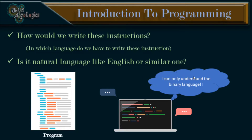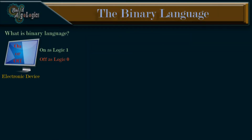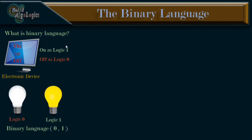Just like we as human beings are able to understand natural languages — or we can say human-based languages — similarly, computers have their own language, which is nothing but binary language. So what is binary language? First of all, the computer is nothing but an electronic device or component. Every electronic device has only two states: either it is on or off. These on and off situations we logically represent as 1 and 0. When the power is on, this is logic 1; otherwise, the logic is 0. This is what we call binary language — binary language only consists of zeros and ones, or a sequence of zeros and ones.